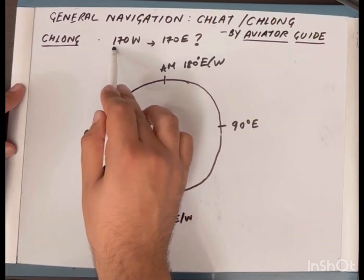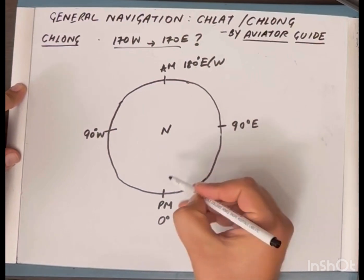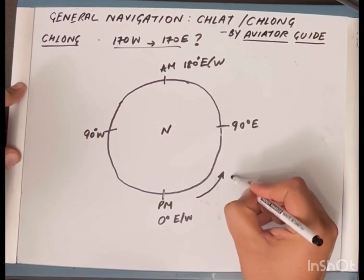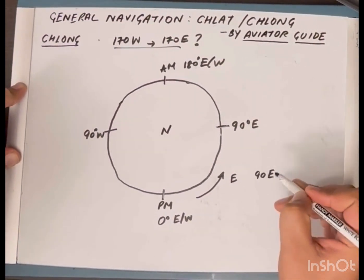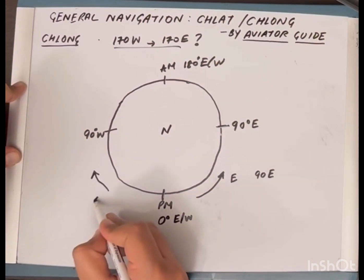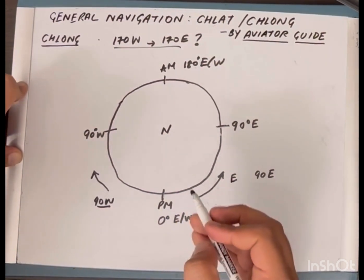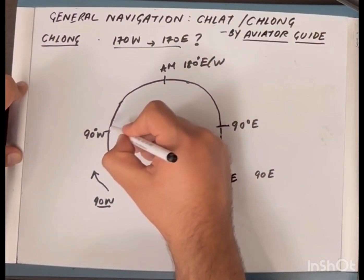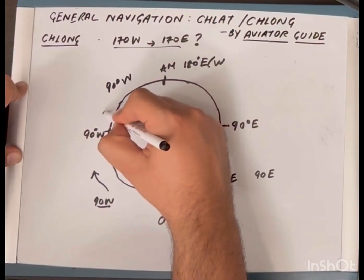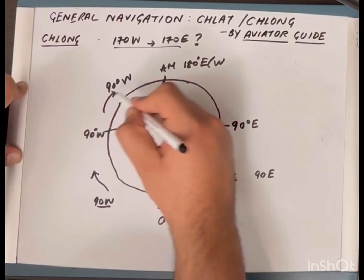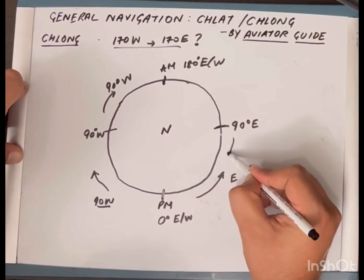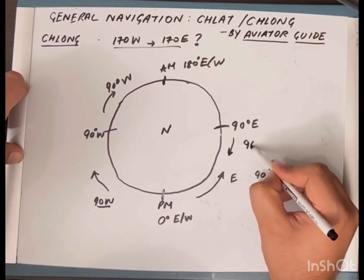Starting with basic examples: the ch-long between the prime meridian (0 degrees) and 90 East is 90 East, since you are traveling eastward. The ch-long between the prime meridian and 90 West is 90 degrees West. If finding the ch-long between 90 West and the anti-meridian, the difference is 90 degrees and the direction is west, so it is 90 West. From 90 East to the prime meridian, traveling westerly, the ch-long is 90 degrees West.